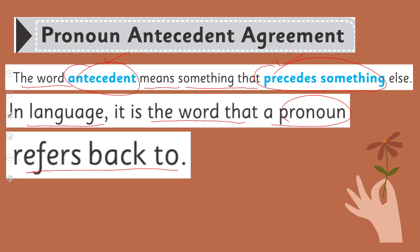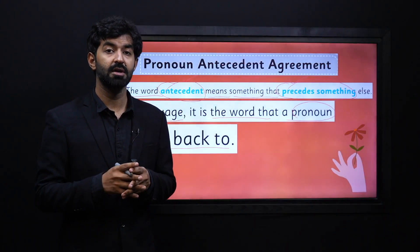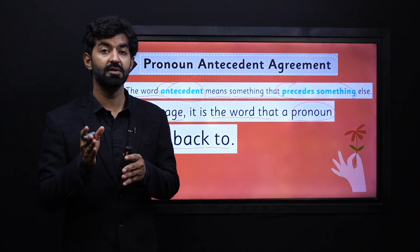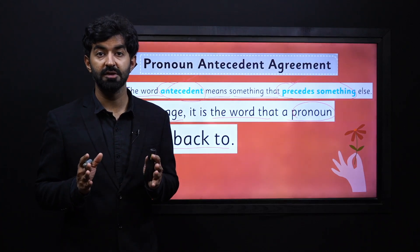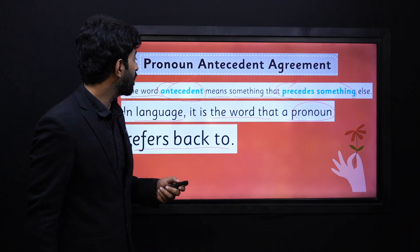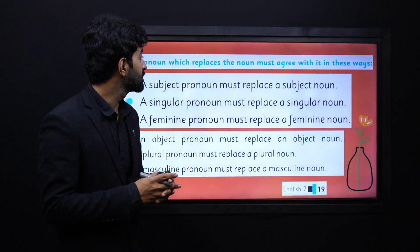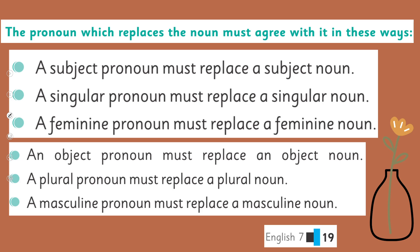In pronoun-antecedent agreement, the antecedent used in the form of a pronoun is actually preceding the noun that comes before and referring back to it. It's very simple to understand, my dear learners. Now, let's talk about pronouns and how they replace nouns. The pronoun which replaces the noun must agree with it in the following ways: a subject pronoun must replace a subject noun.